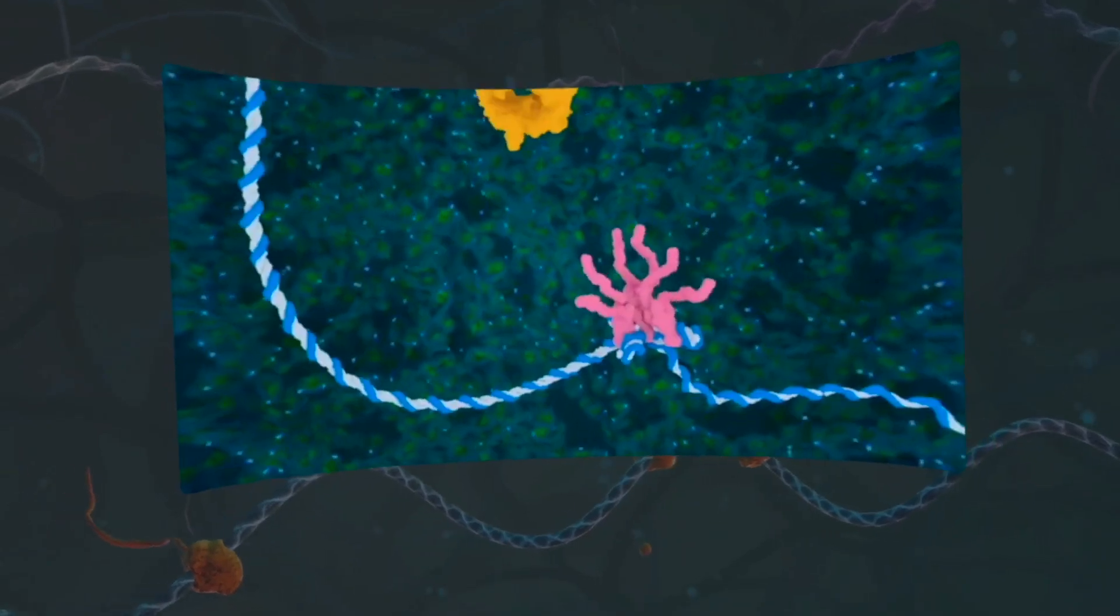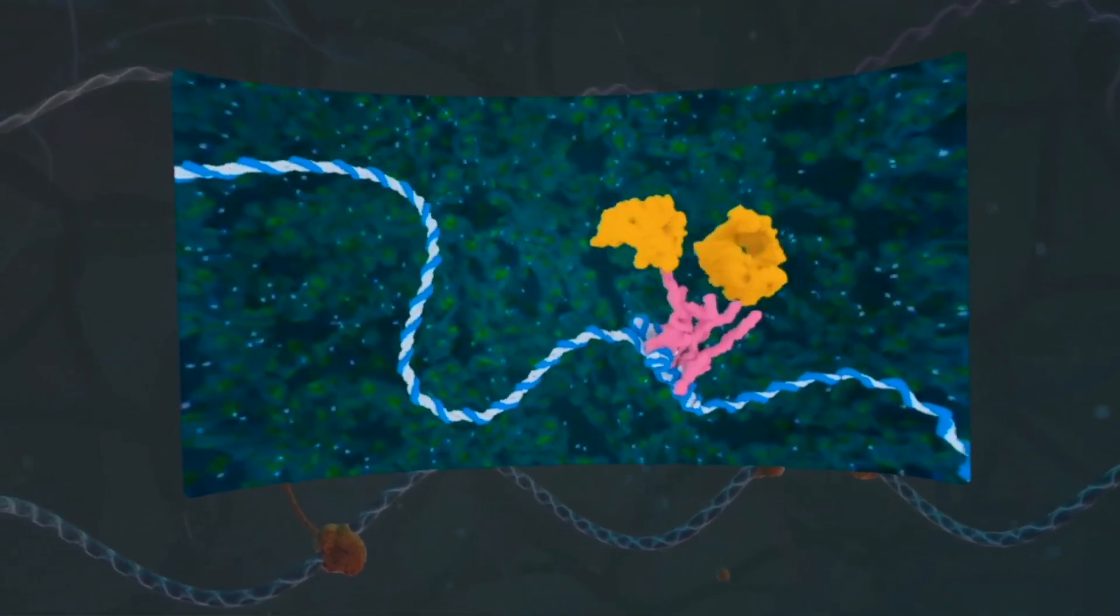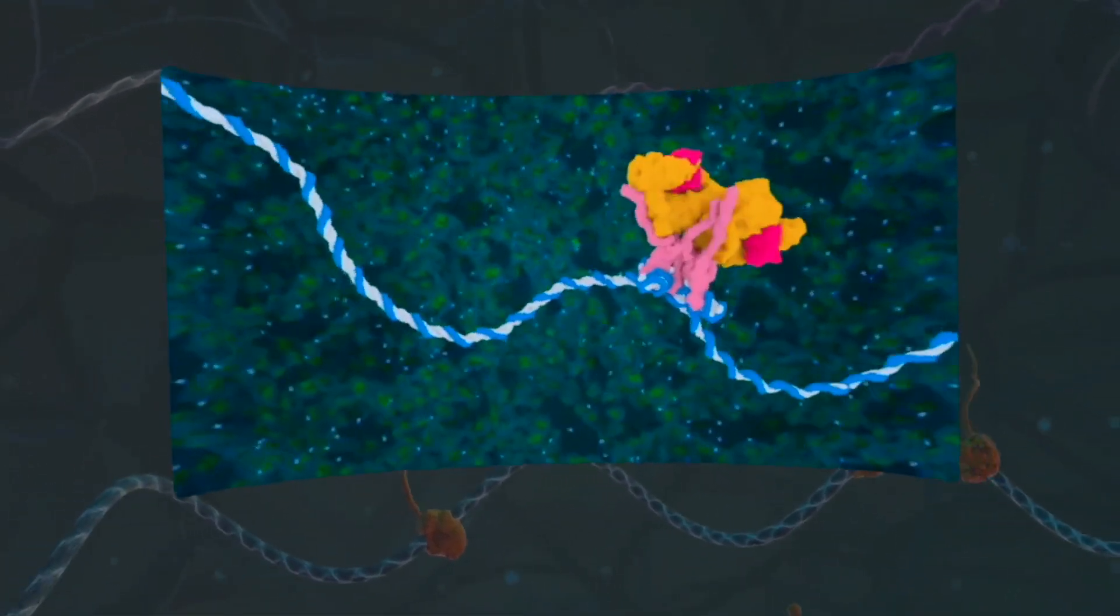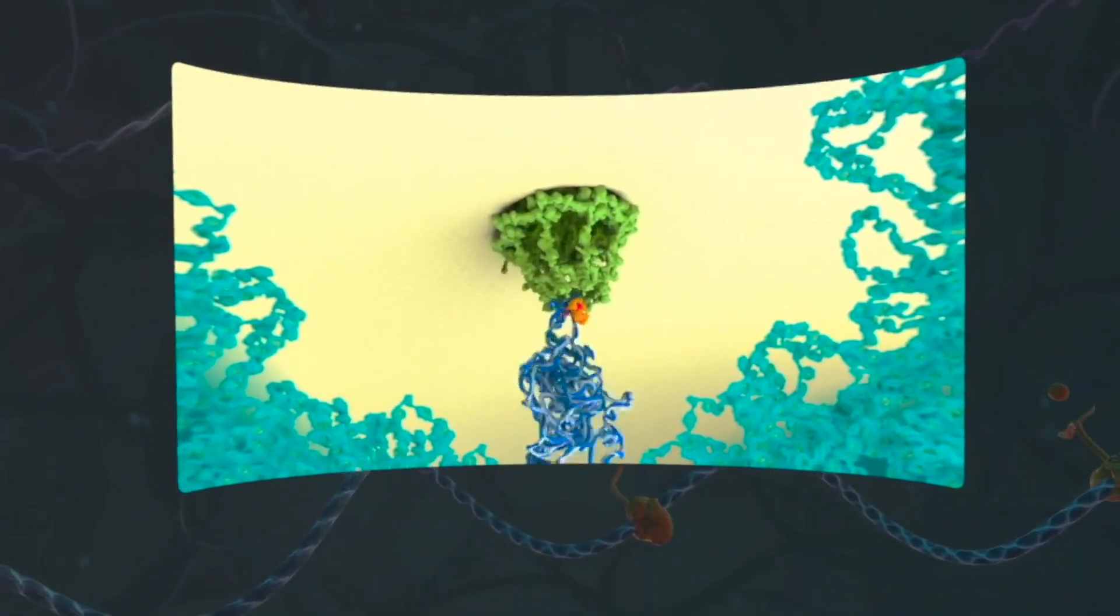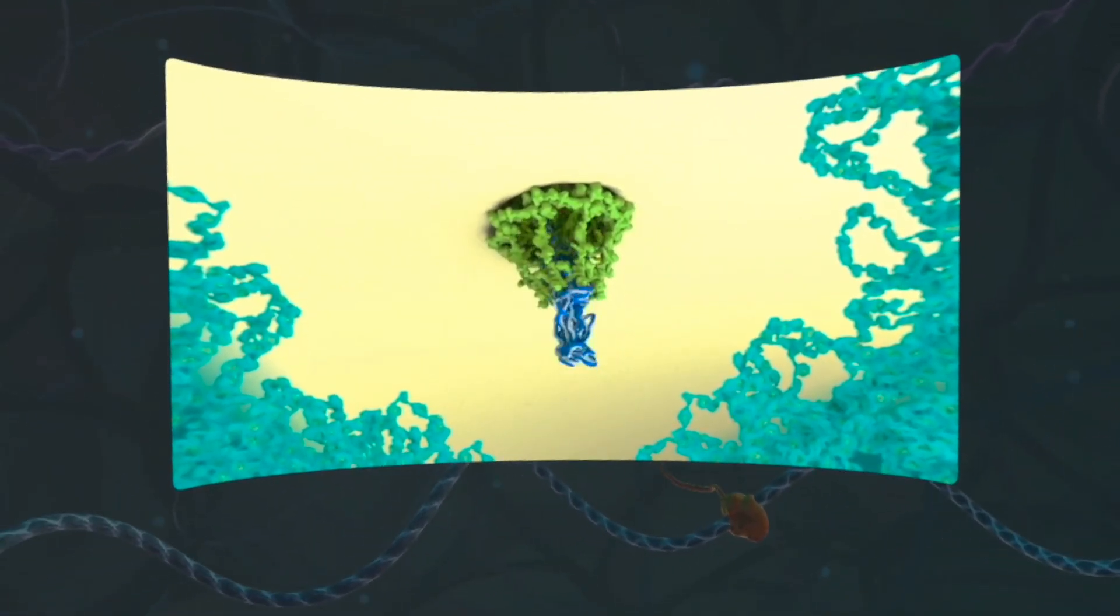It contains a sequence that binds to the Rev protein, in pink, which interacts with other cellular proteins to carry the viral RNA towards the nuclear pore, allowing it to exit the nucleus.